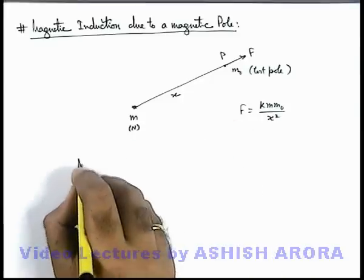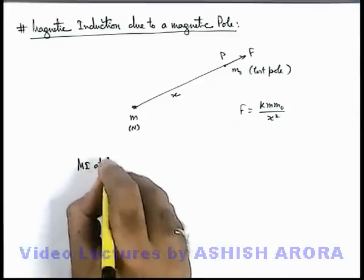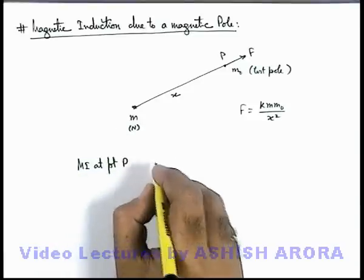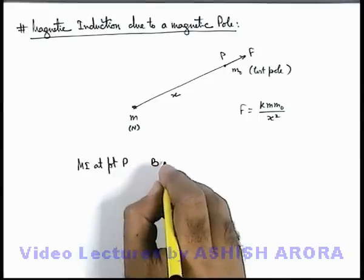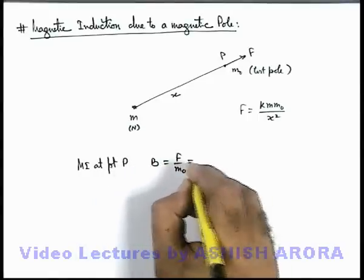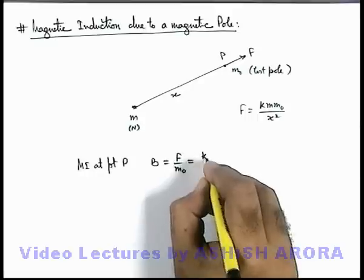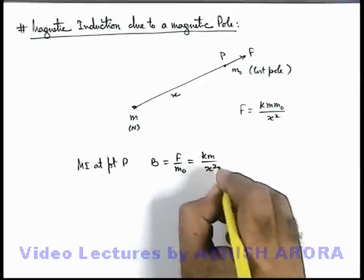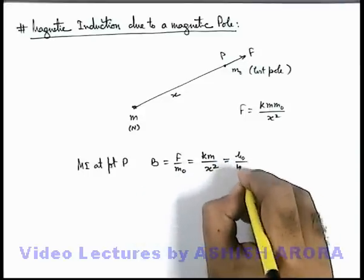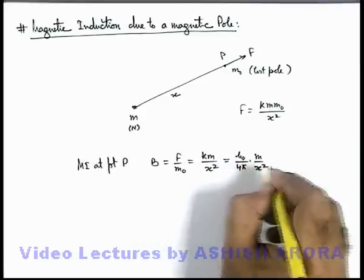Now in this situation we can directly write magnetic induction at point P, which is due to this magnetic pole of strength m. This can be given as B = F/m₀. So in magnitude it can be written as km/x², and if we substitute the value of k for free space it is μ₀/4π * m/x².